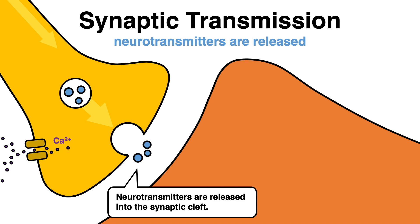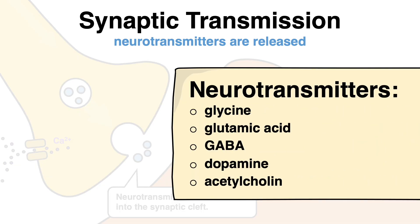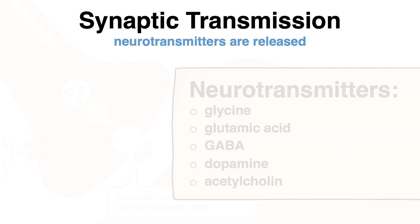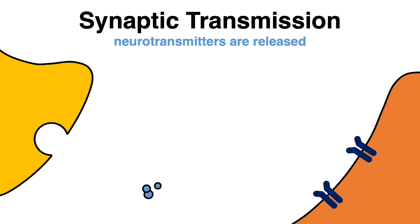There are various neurotransmitters with many different functions. To name a few famous examples, neurotransmitters can be amino acids such as glycine, glutamic acid, or GABA. Further, you may have heard about dopamine and maybe even acetylcholine. But there is way more.